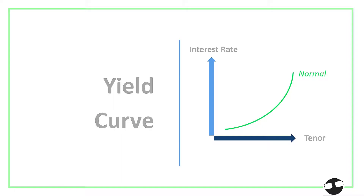The normal yield curve looks like this — it would suggest that shorter tenor bonds would have lesser interest rates compared to longer tenor bonds. So we can conclude that a one-year tenor bond will have lower interest rates compared to, let's say, a ten-year tenor bond.